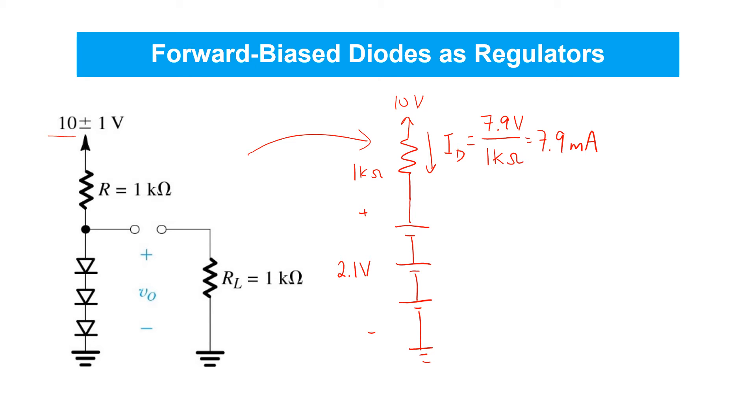If we've got a 1 kilo ohm load connected at the output of the regulator as pictured on the left, then we know that there would be a load current drawn here that's equal to the 2.1 volt drop over the 1 kilo ohm resistor, and that's 2.1 milliamps flowing over here. That leaves the forward current through the diodes Id equaling 7.9 minus 2.1 milliamps, or 5.8 milliamps. This is then the solution of the bias point of this regulator circuit operating with a 10 volt supply and a 1 kilo ohm load.